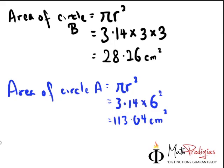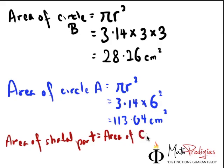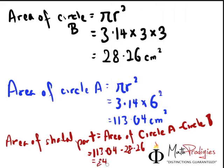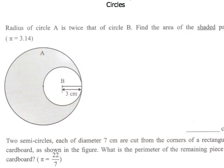So we're going to write down here, area of shaded part, the answer here. Equals to area of circle A minus circle B. And so you will get 113.04 minus 28.26, which gives you the answer of 84.78 cm squared. And that's it. It's very simple. That is the answer for question 1.